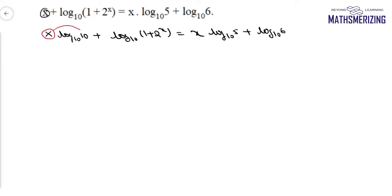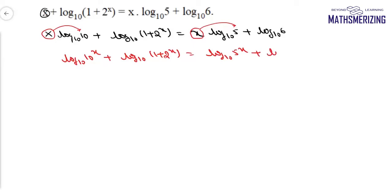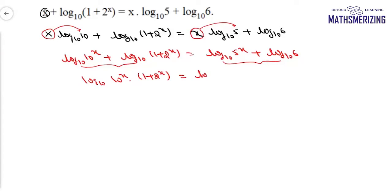Now I can apply the power rule of logarithms, bringing x into the exponent. So I can write it as log(10 to the power x) plus log(1 + 2 to the power x) equals log(5 to the power x) plus log 6. Now using the property log m plus log n equals log(mn), I can write the left side as log(10 to the power x times (1 + 2 to the power x)) and the right side as log(5 to the power x times 6).